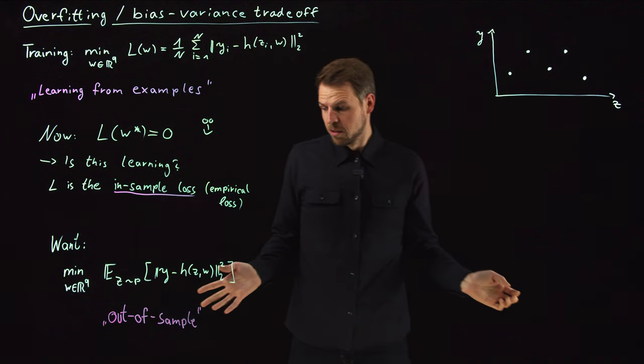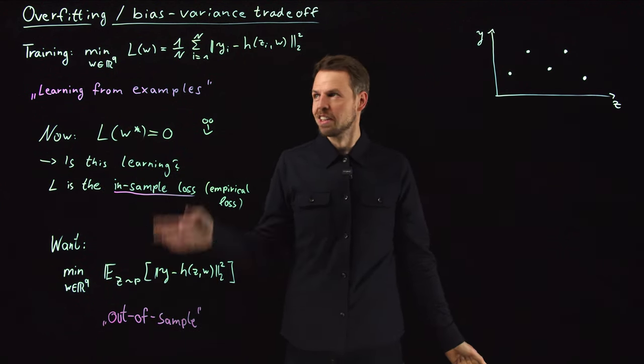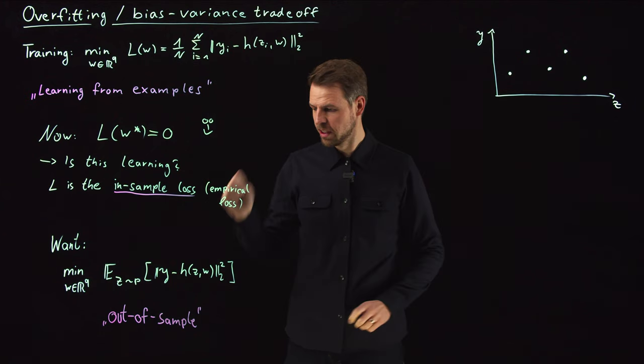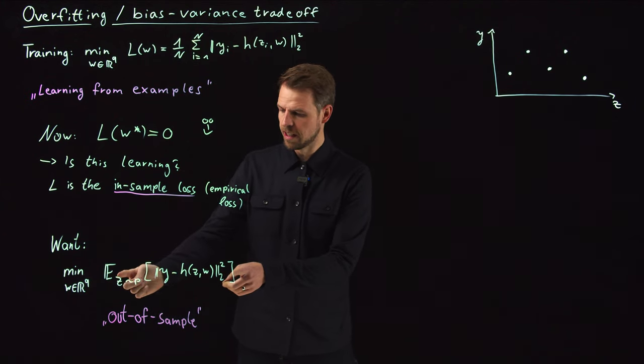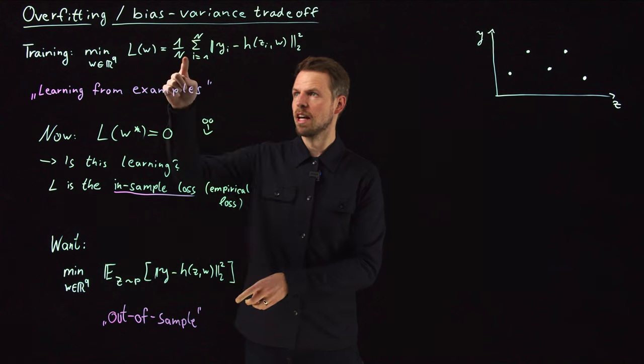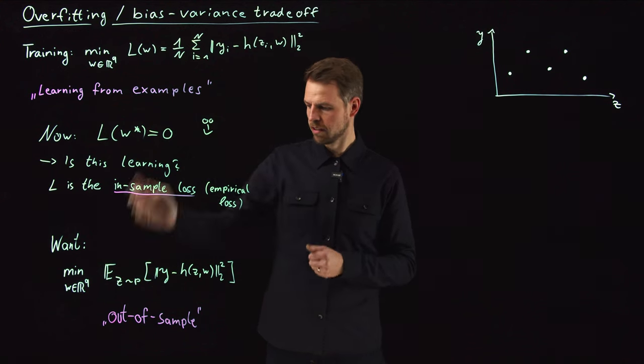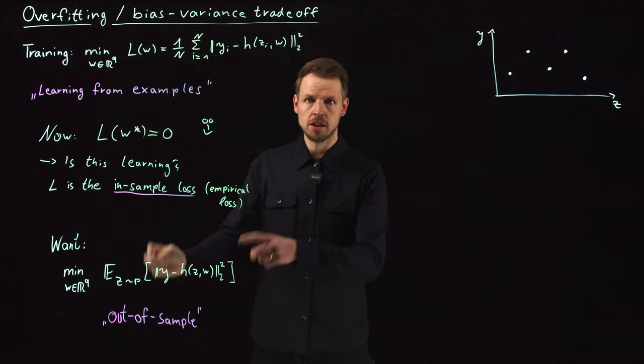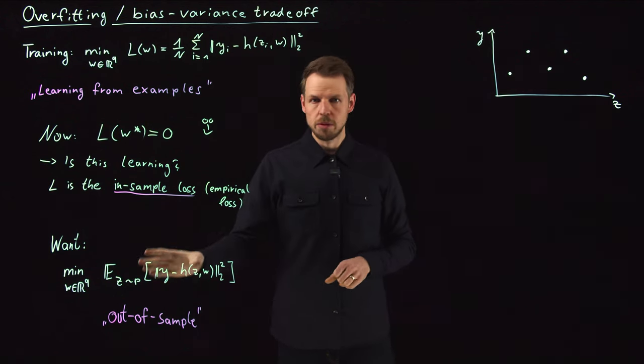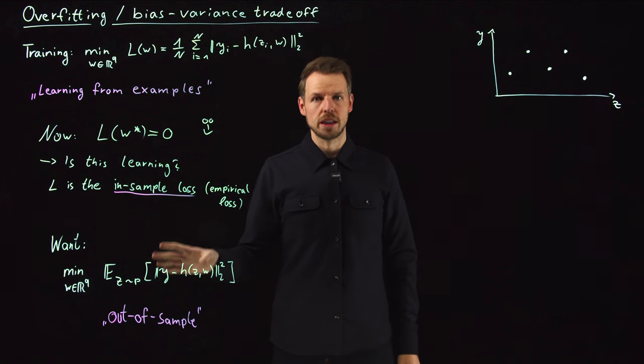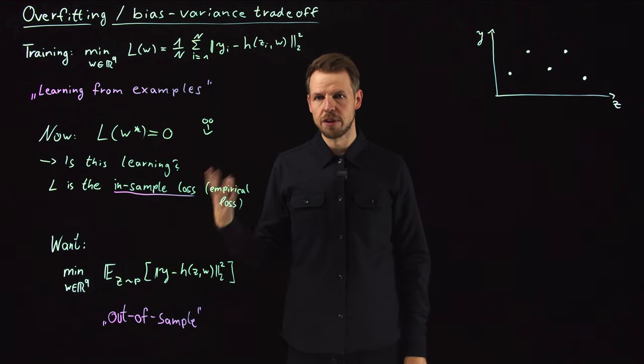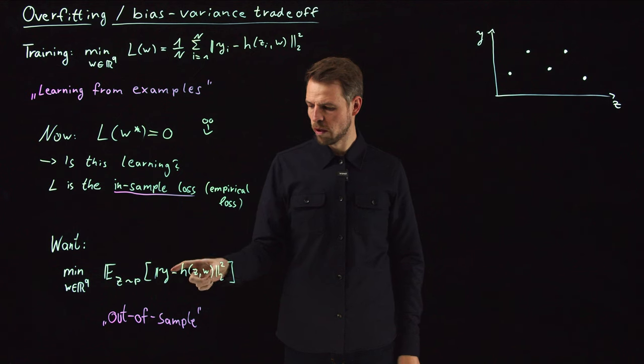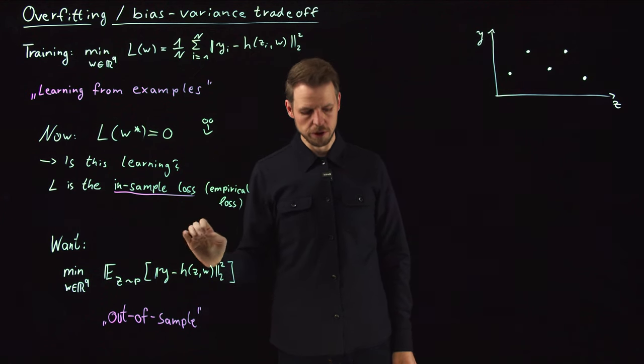Clearly, we don't have access to it. We do not have out-of-sample data, this is why we have the sample. Actually, if we had the data, then this N would mean we have all the data. This is usually infinitely large, but if we had it, then this would actually correspond to the mean. But we want to minimize this, and this is what, in the end, means learning. You have a function H that performs well out-of-sample.